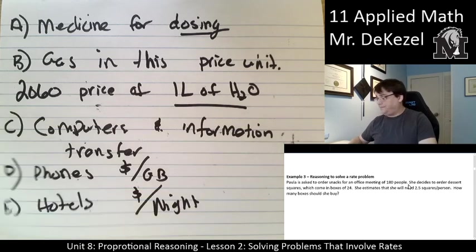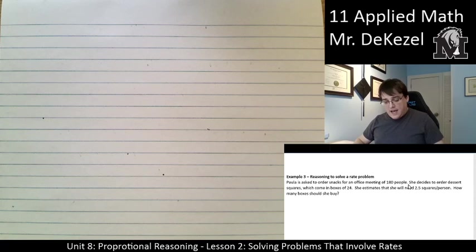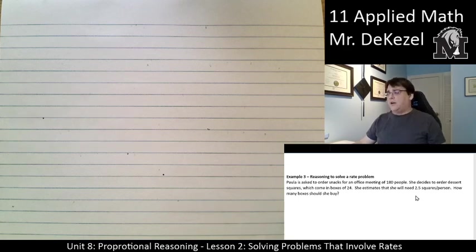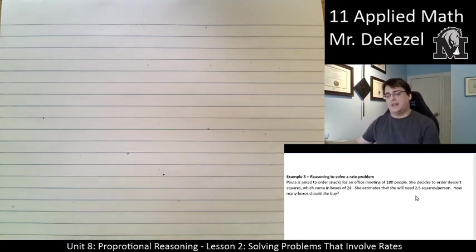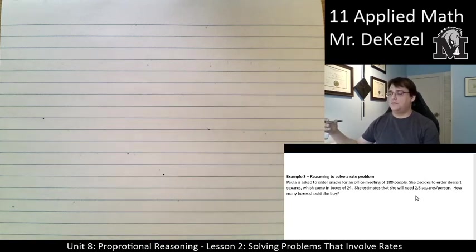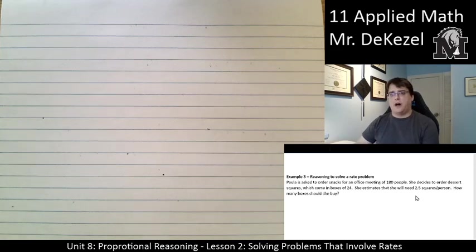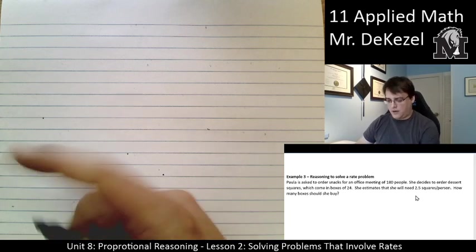All right, let's do example three. Paula is asked to order snacks for an office meeting of 180 people. Okay, that's my worst nightmare. She decides to order dessert squares, which come in boxes of 24. She estimates that she will need about two and a half squares per person. Okay, that's a hungry office. How many boxes should she buy? Okay, so this is a problem that can be done a couple of ways. I'm going to do it two ways. The first way I'm going to do it is kind of the math-specific, math-accepted way, if you will. But this isn't exactly the way that all of our brains work, necessarily. So, what we want to end up with is the number of boxes that she should buy. And when I look at this problem, I see one meeting, 180 people. I see two and a half squares per person. I see one box, 24 squares. The only place that I see boxes is, like, how many squares come in the box. And I want to find out how many boxes I want. So, I'm going to start with that.